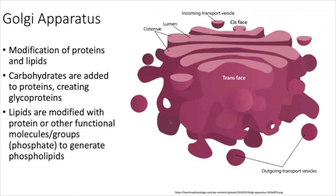Mitochondria — often called 'the powerhouse of the cell,' though they do much more than that. Energy metabolism is a main job: in the inner membrane you have the electron transport chain, the citric acid cycle occurs in the matrix, and byproducts are used to pump hydrogens into the intermembrane space. Allowing those hydrogens to pass back through into the matrix generates ATP, which powers every living thing.